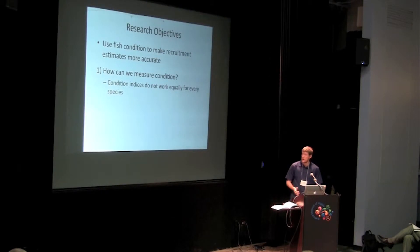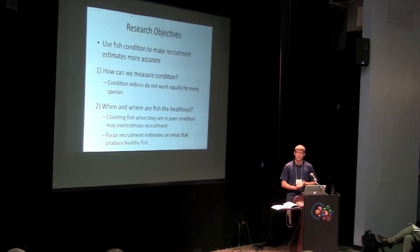First, how can we measure condition for these species? Fishery scientists have developed a large number of condition indices, but they don't necessarily work equally well for every species. So we need to find out what works for juvenile croaker and flounder. Once we do that, we can look at the second question: when and where are these fish the healthiest?